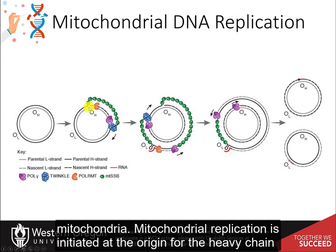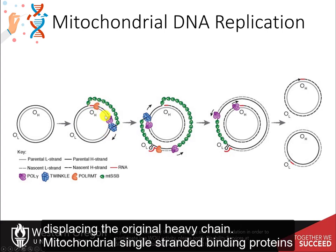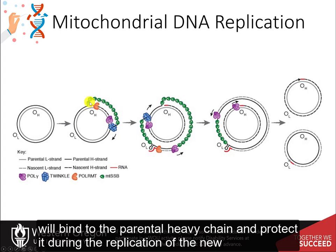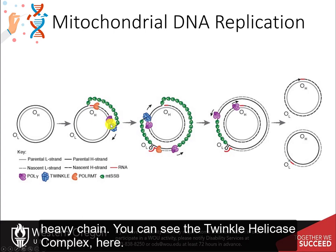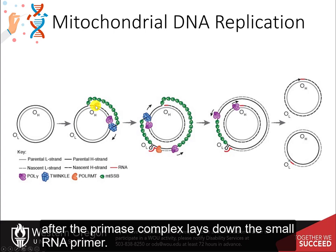Mitochondrial replication is initiated at the origin for the heavy strand by polymerase RMT. This proceeds unidirectionally around the mitochondrial DNA, displacing the original heavy strand. Mitochondrial single-stranded binding proteins will bind to the parental heavy strand and protect it during the replication of the new heavy strand.